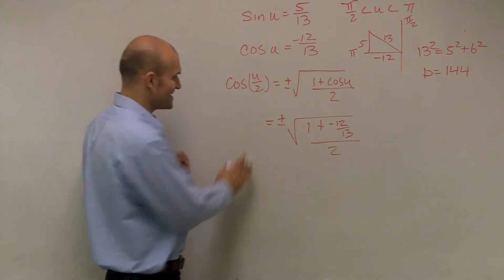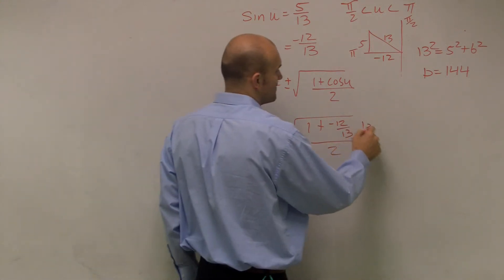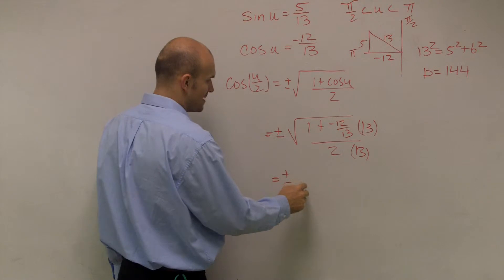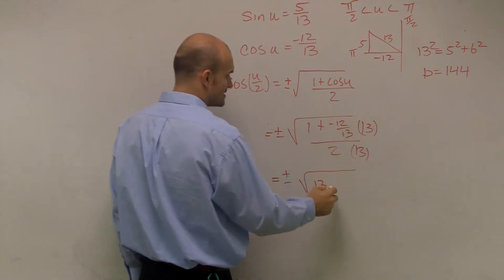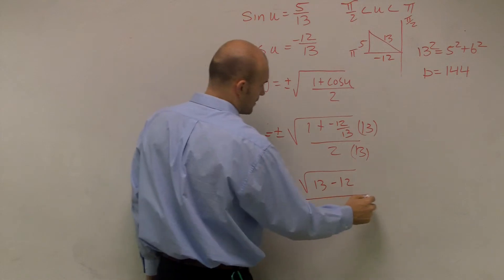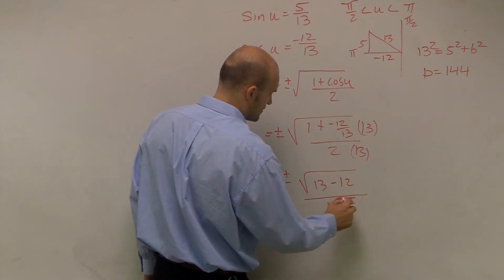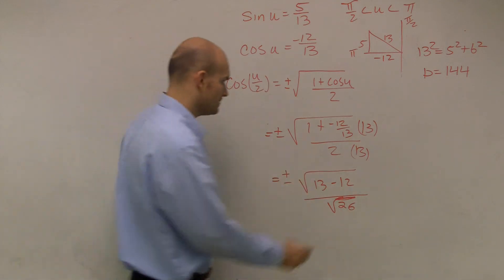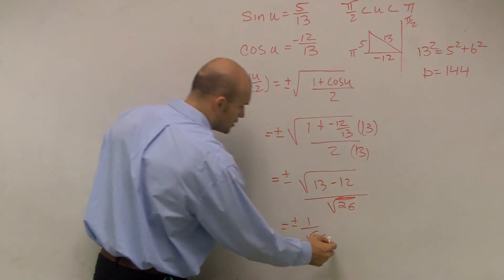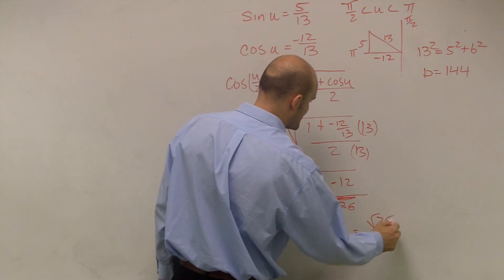To simplify, I get rid of the 13 in the denominator by multiplying everything by 13. Doing that gives me plus or minus the radical of (13 times 1 is 13, minus 12) all over the radical of 26. So 13 minus 12 equals 1, giving me plus or minus 1 over radical 26. Since we can't leave a radical in the denominator, I rationalize it.